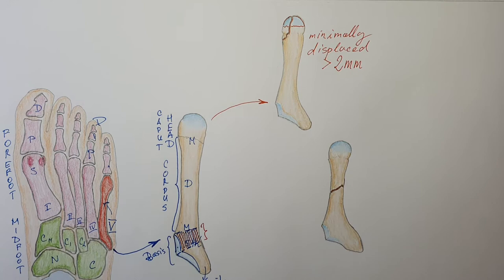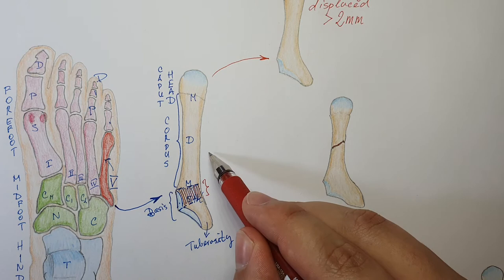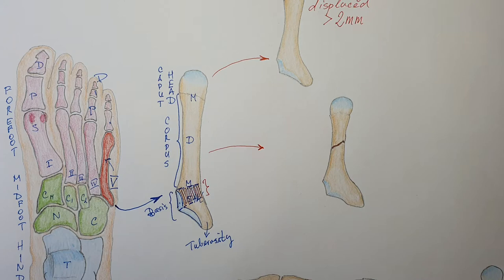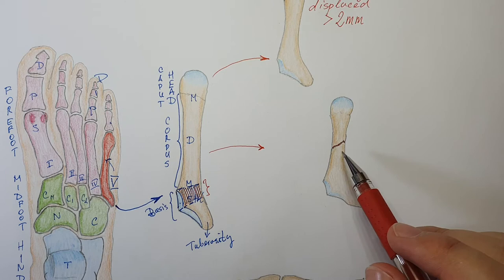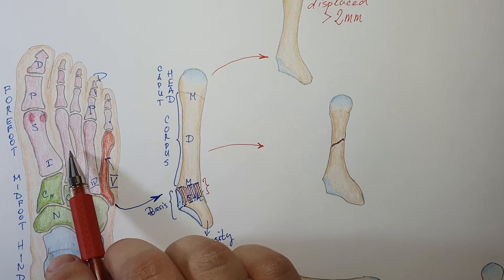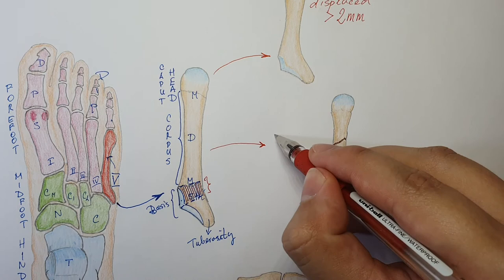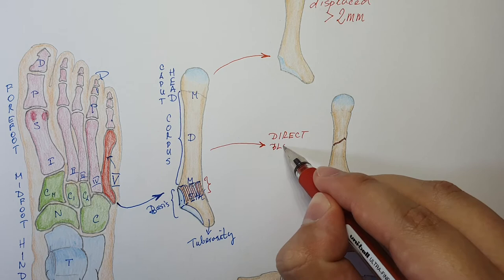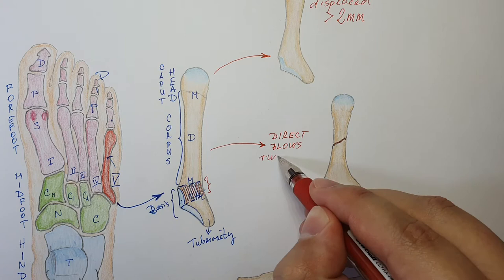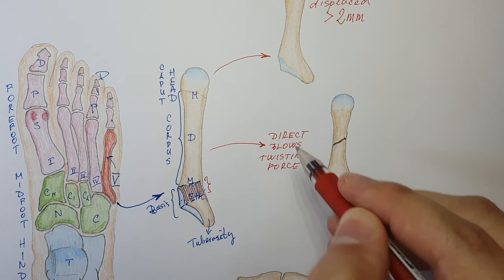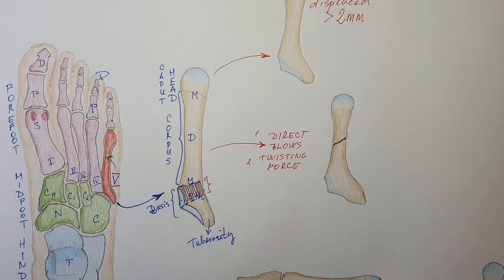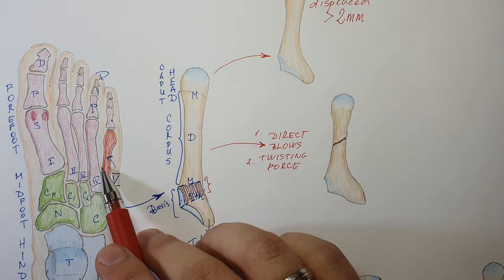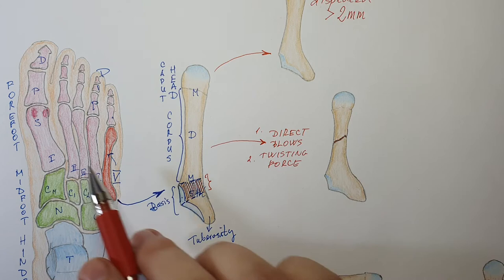Then we have fractures of the diaphysis — the corpus of the metatarsal bone. These fractures can occur like fractures of the diaphysis of other metatarsal bones and most often occur by direct blows or a strong twisting force. If the patient tells you something heavy fell on his foot, you will suspect a fracture — there will be bruising and pain.